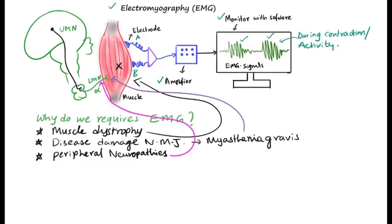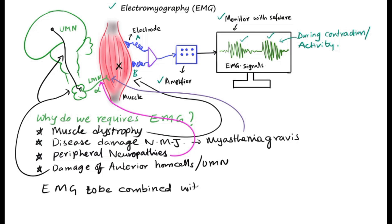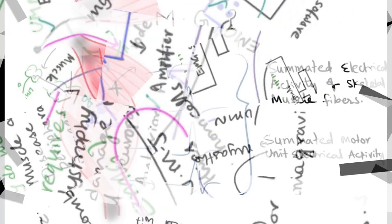Carpal tunnel syndrome is an example, or any damage of anterior horn cells or upper motor neurons descending from motor cortex to anterior horn cell. These are the indications of EMG recording. However, EMG should be combined with nerve conduction studies for better results to identify where exactly the problem lies.